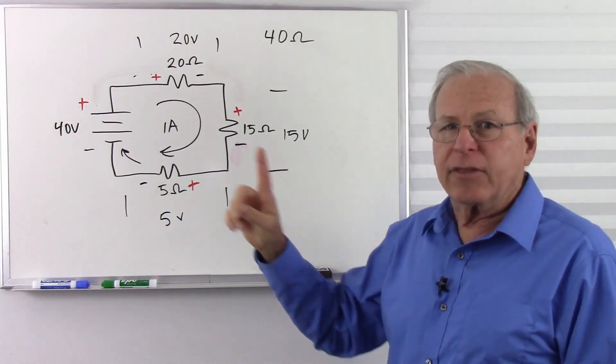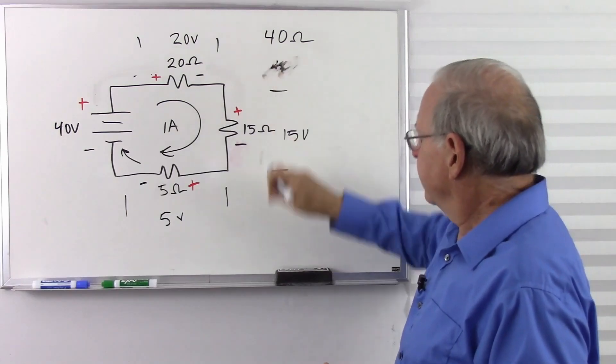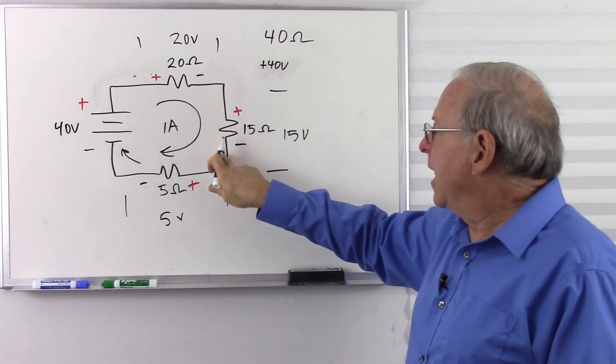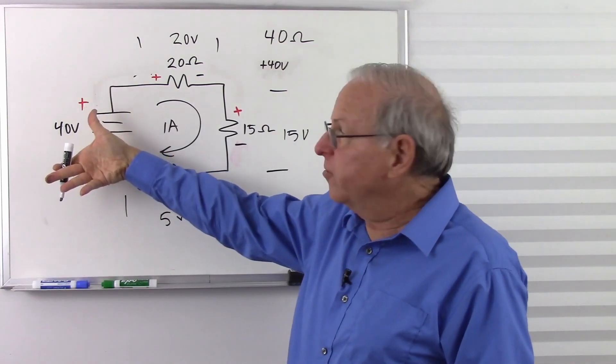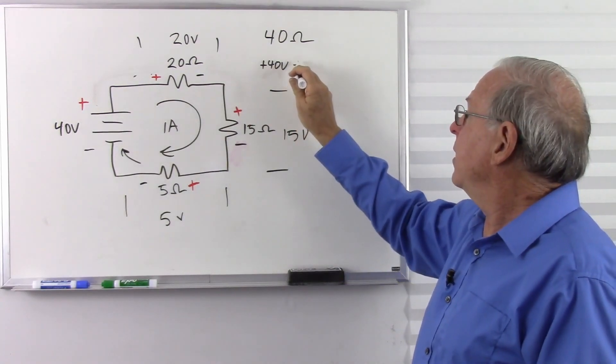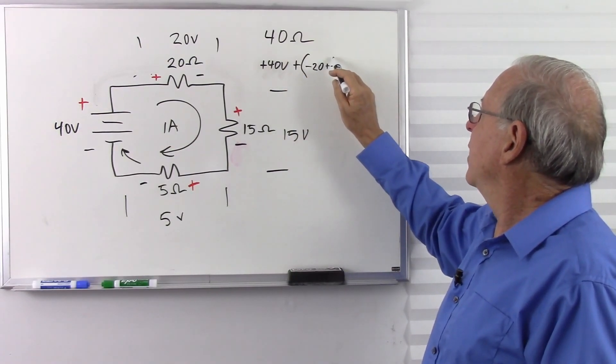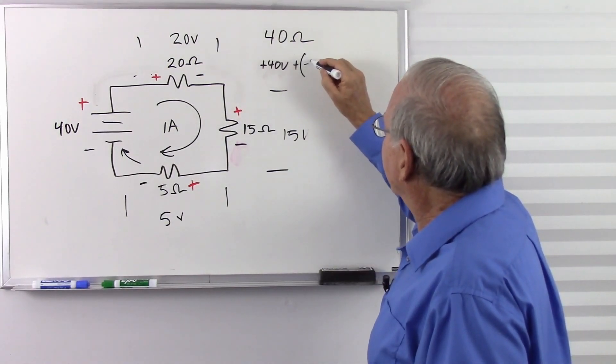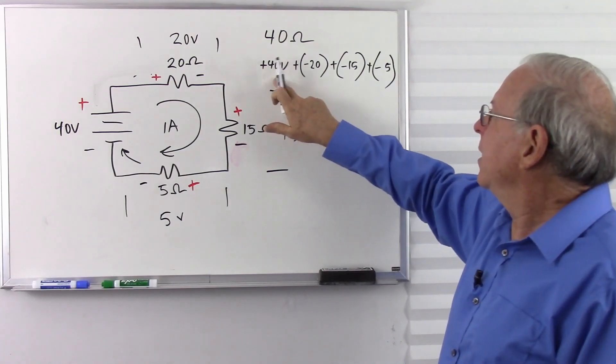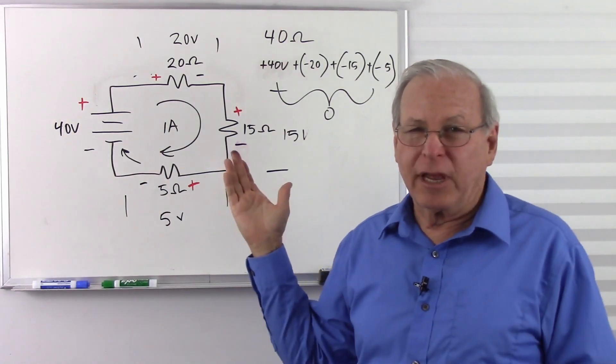But the classical way of stating it is that the voltages must add up to zero. So, here we have positive 40 volts. And then we have negative 20, negative 15, and negative 5. So, notice if the polarity is this way, it's positive. If we flip it, it's negative. So, we have one positive voltage, and then three negative voltages. So, that's 40. So, those must all add up to zero. So, we have 40 plus negative 20, plus negative 15, plus negative 5. And so, 40 plus negative 20, plus negative 15, plus negative 5, all adds up to zero. And that's the classical explanation of Kirchhoff's voltage law.